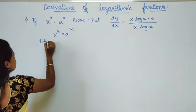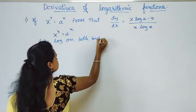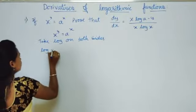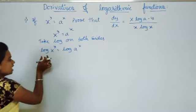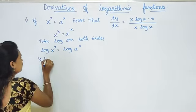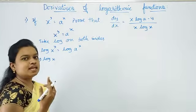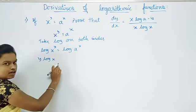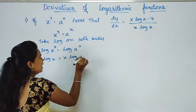Consider x power y is equal to a power x. Take logarithm on both sides. We get log of x power y equals log of a power x. Using the logarithmic property — log of x power n equals n log x — this becomes y log x equals x log a.